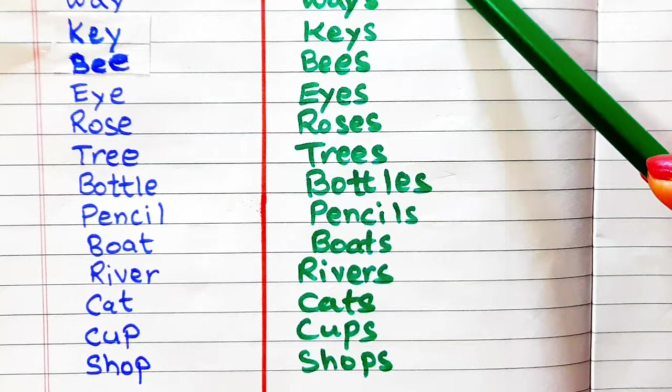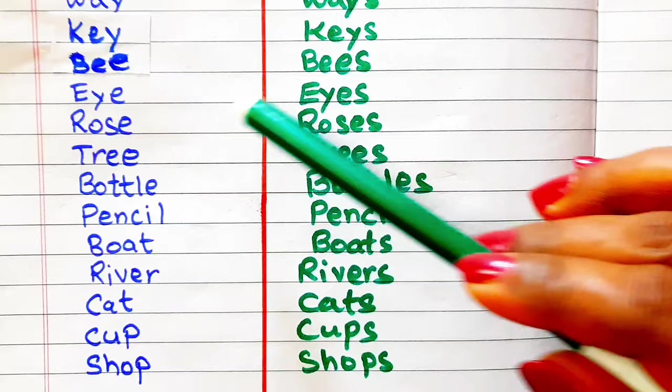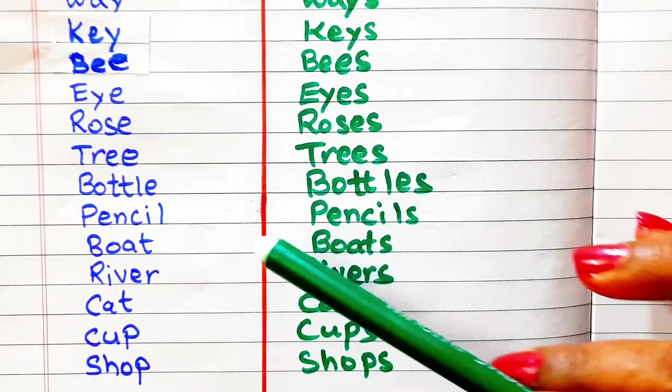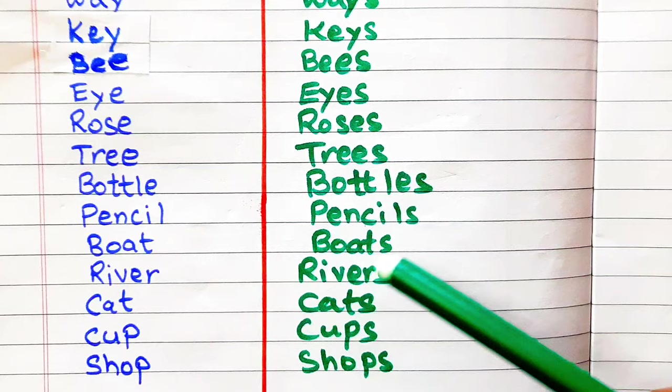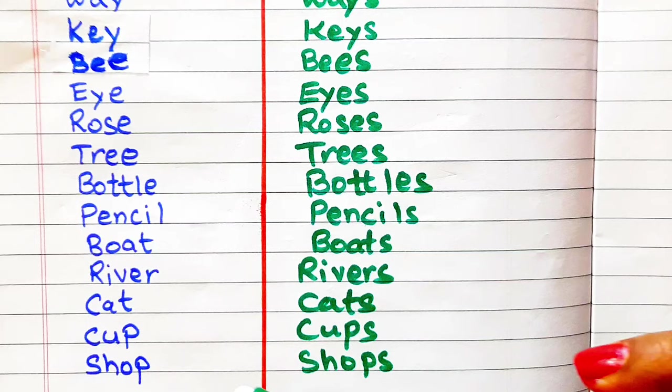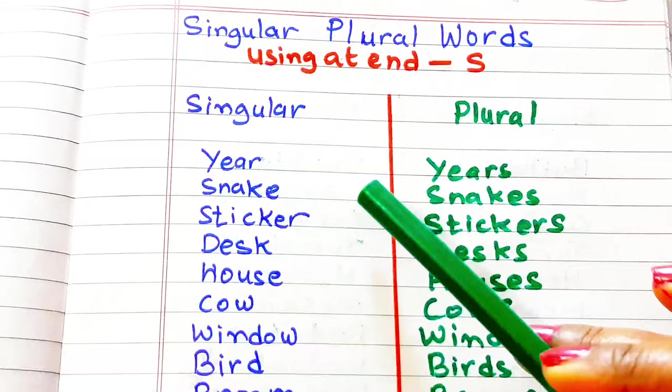Eye, eyes. Rose, roses. Tree, trees. Bottle, bottles. Pencil, pencils. Boat, boats. River, rivers. Cat, cats. Cup, cups. Shop, shops.